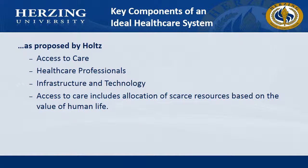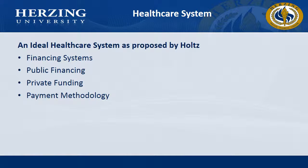According to the textbook, there are key components of an ideal health system, which include access to care, health care professionals, infrastructure and technology, and access to care, which includes allocation of scarce resources based on the value of human life. Further key components include a financing system, which could be public or private financing, and also payment methodology.